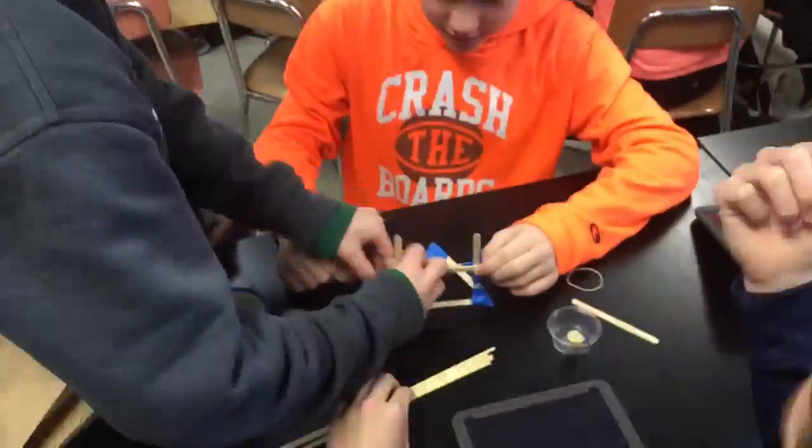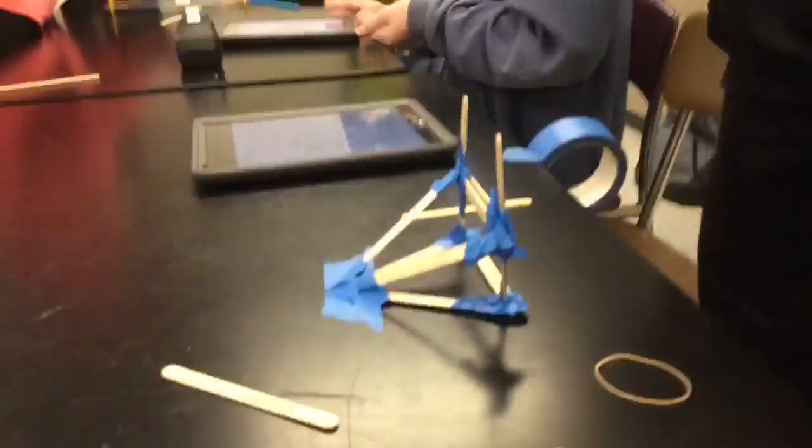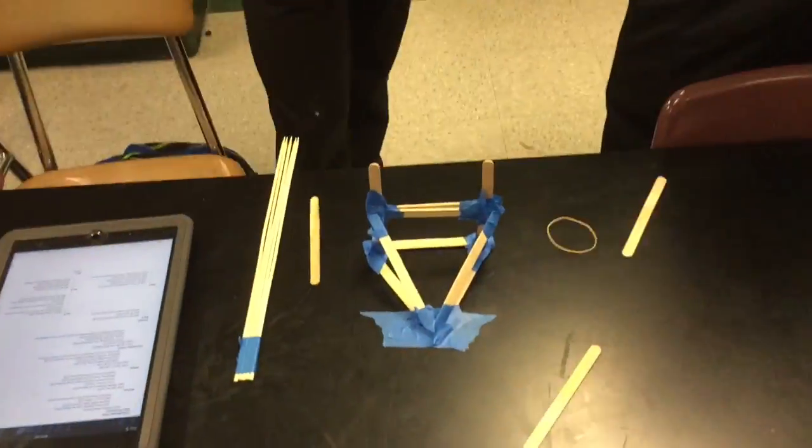After we made the base, we added a field goal-like object to support the catapult. We then proceeded to add two support beams to each side of the catapult.